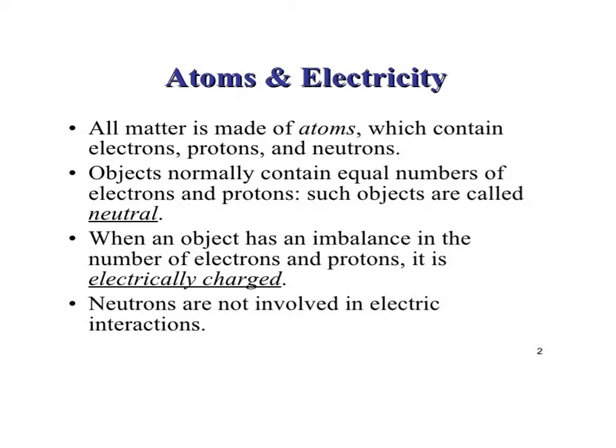Electrons have negative charge and protons have positive charge. If they are equal in numbers, such objects are known as neutrals. When an object has an imbalance in the number of electrons and protons, it is electrically charged.